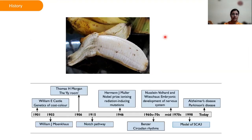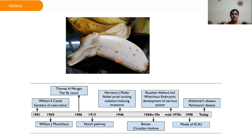Drosophila melanogaster is a fruit fly, a little insect about three millimeters long, of the kind that accumulates over spoiled fruits. It is also one of the most valuable organisms in biological research, particularly in genetics and developmental biology. Drosophila has been used as a model organism for research for almost a century, and today several thousand scientists are working on many different aspects of the fruit fly.